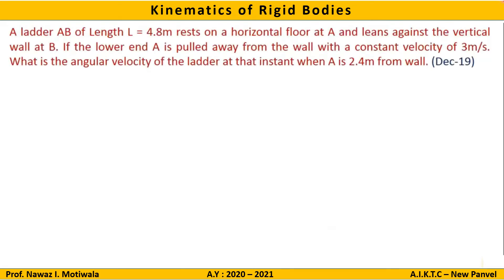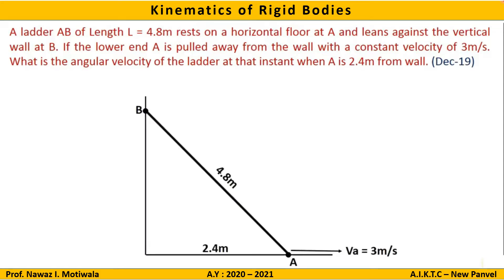Let us start with the first problem: a ladder AB of length L equal to 4.8 meters rests on a horizontal floor at point A and leans against a vertical wall at B. If the lower end A is pulled away from the wall with a constant velocity of 3 meters per second, what is the angular velocity of the ladder at the instant when A is 2.4 meters from the wall? This question was asked in the December 2019 Mumbai University paper. The diagram shows a 4.8-meter ladder leaning against the wall, with point A moving right at 3 m/s and located 2.4 meters from the wall.